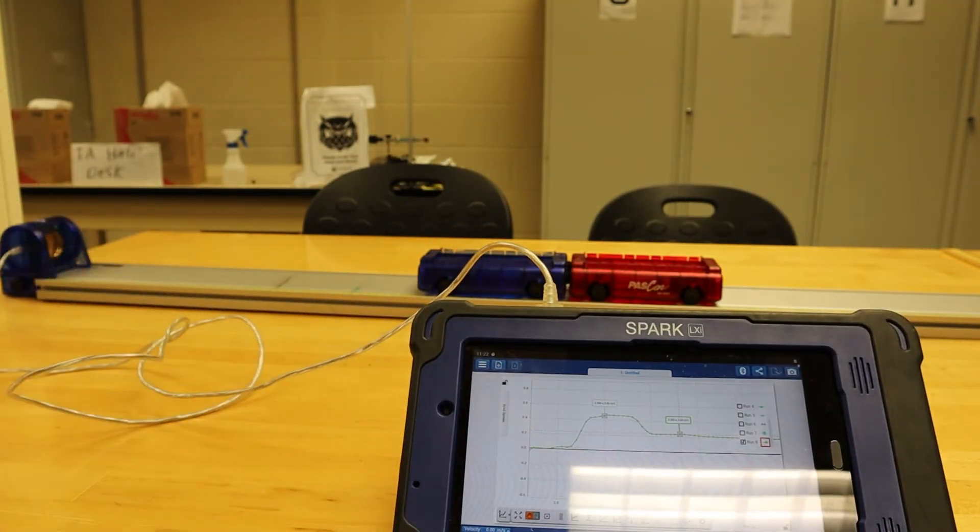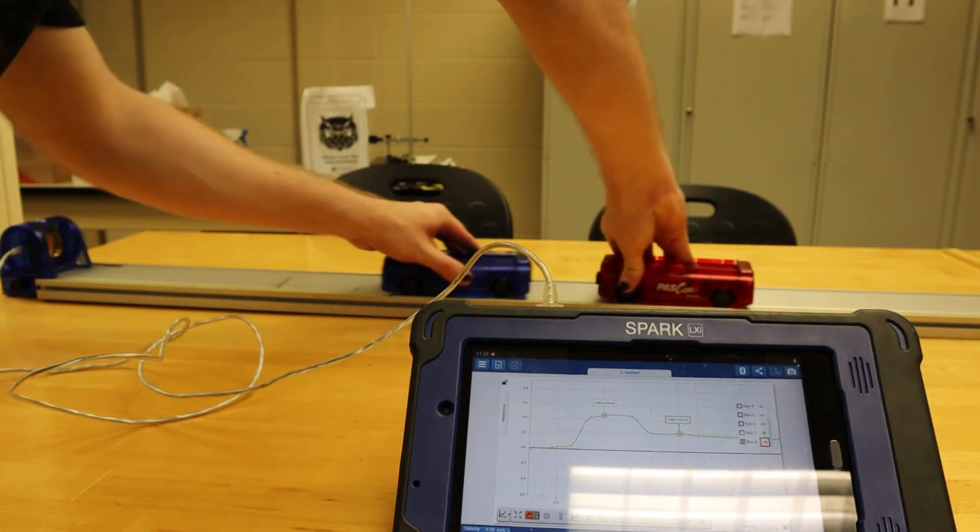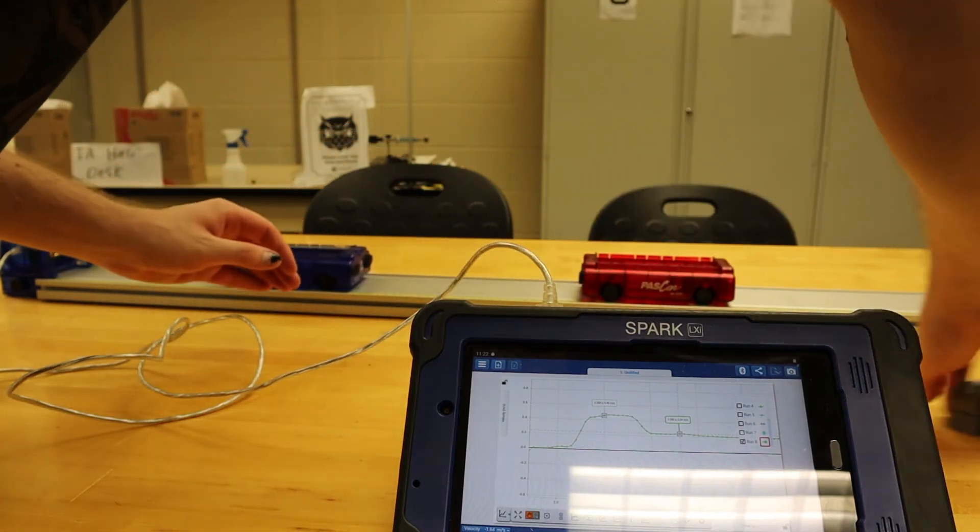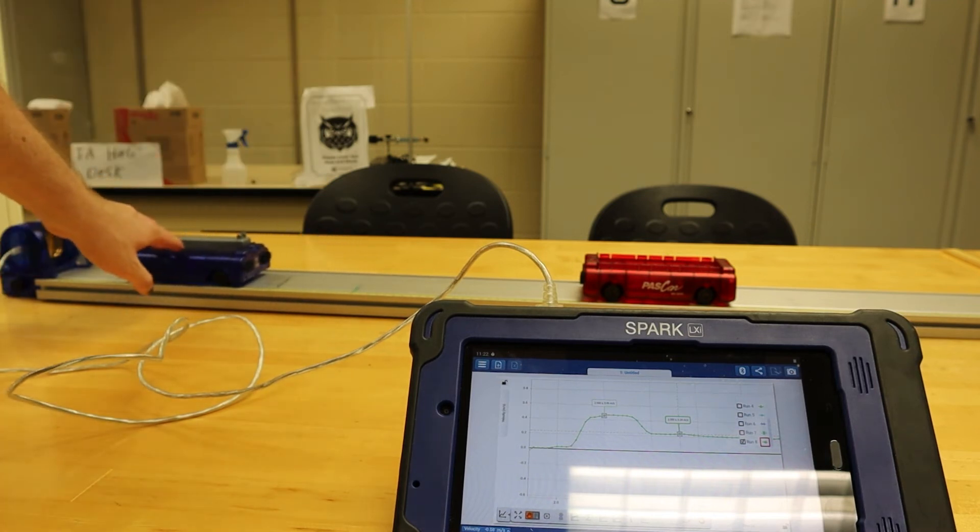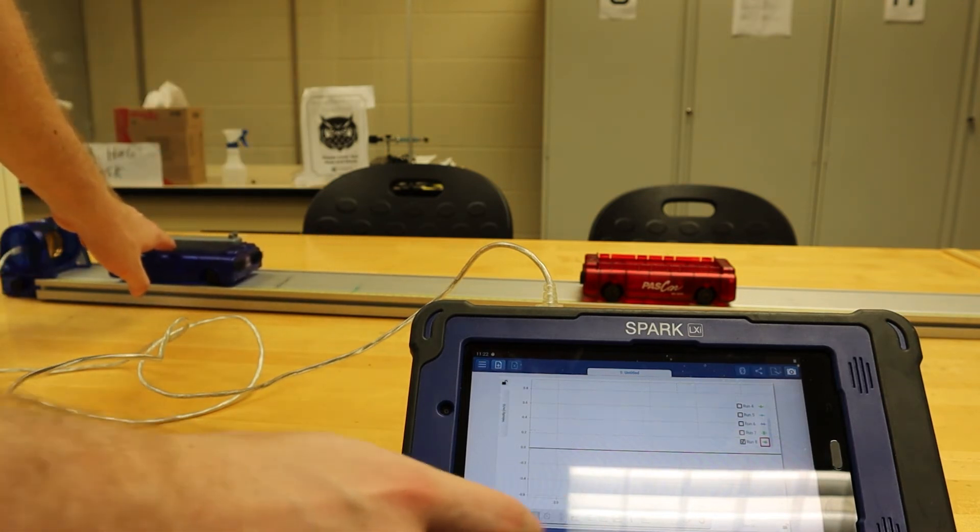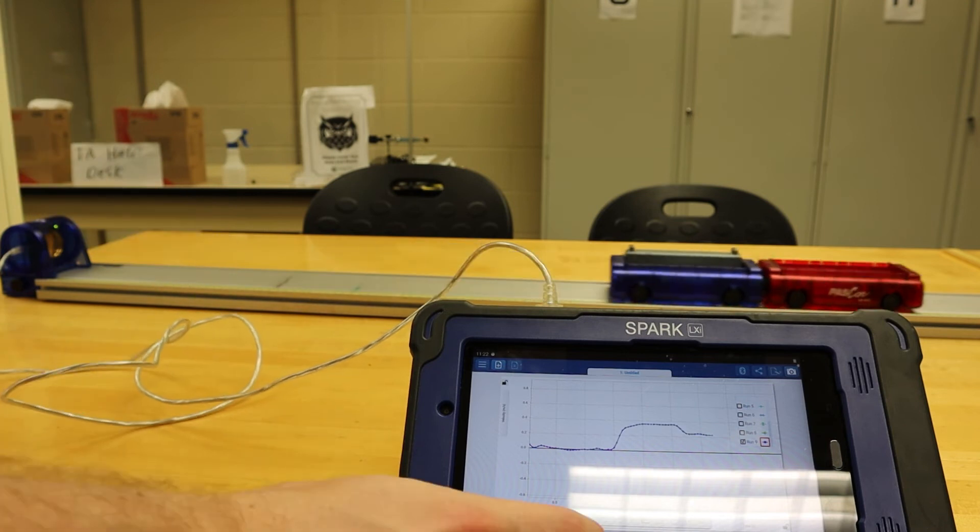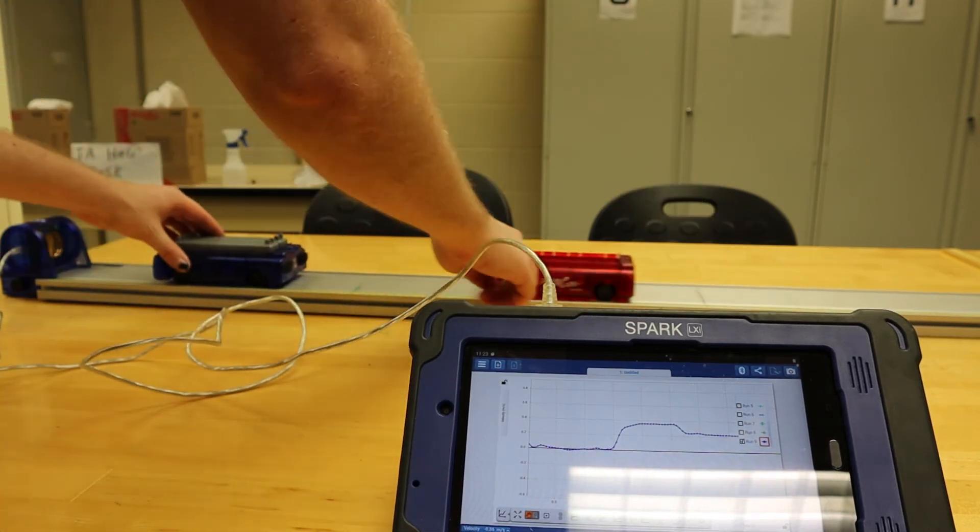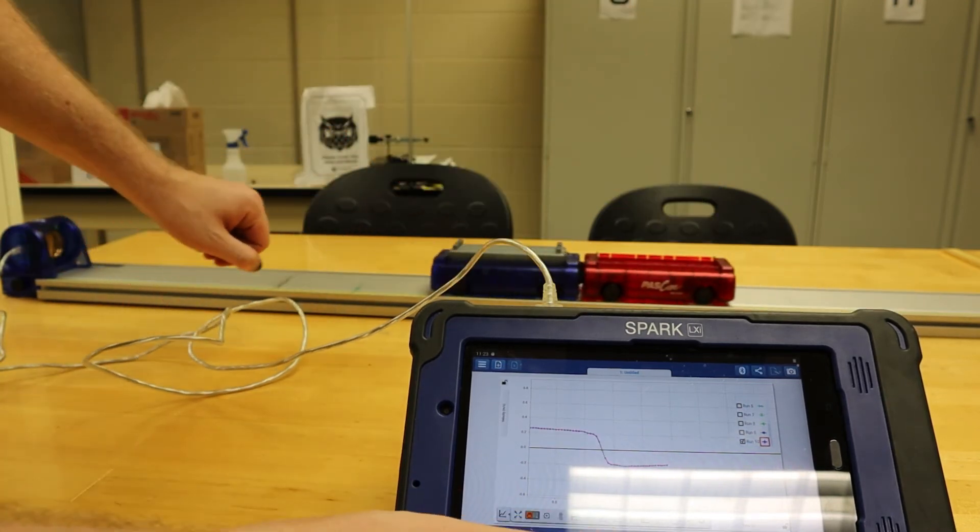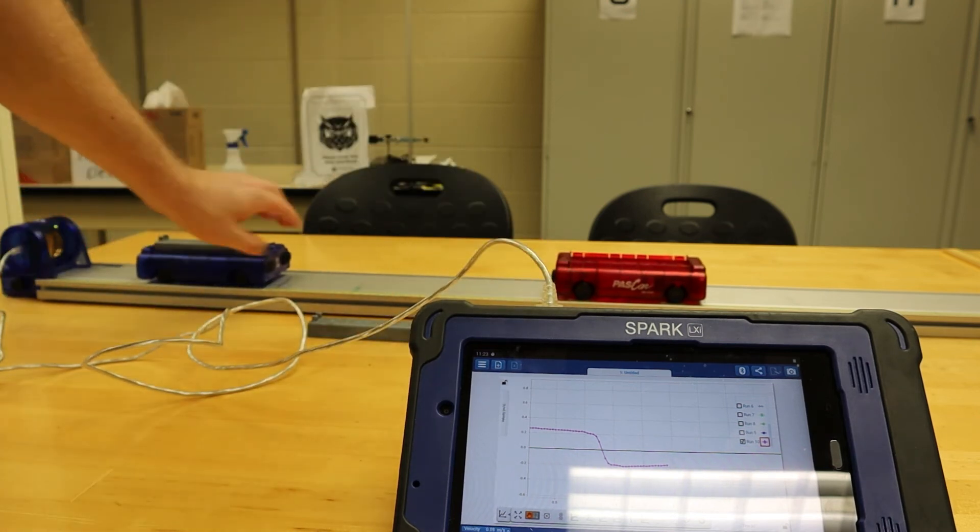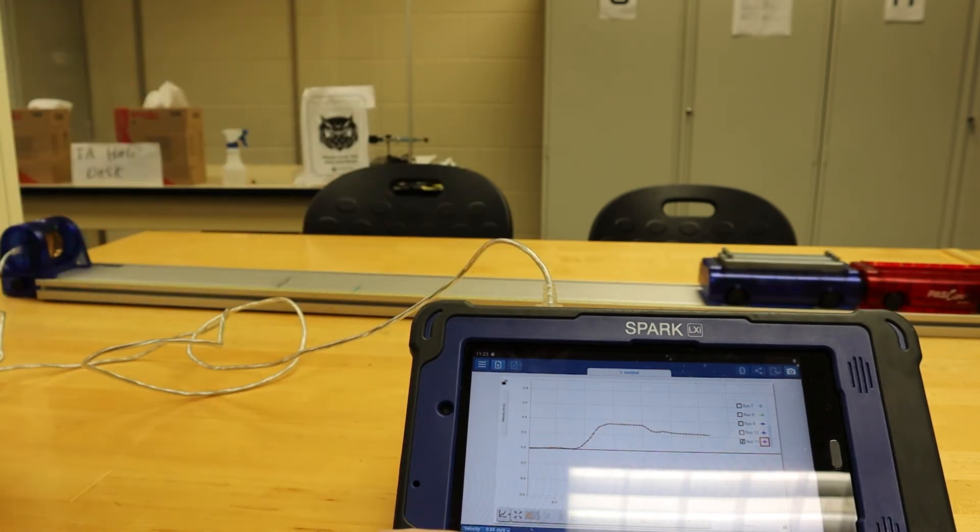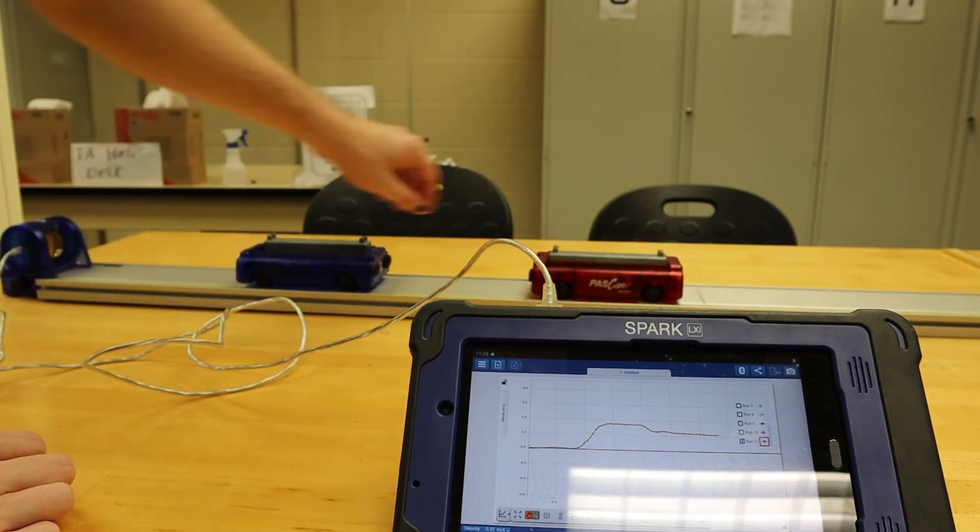Once we have the data recorded, we will then reset the passcars and add one of the 250-gram masses to the blue passcar and repeat the experiment. We will then step through all the iterations of having 0, 1, and 2 masses on both the red and blue cars until we have filled up our data table.